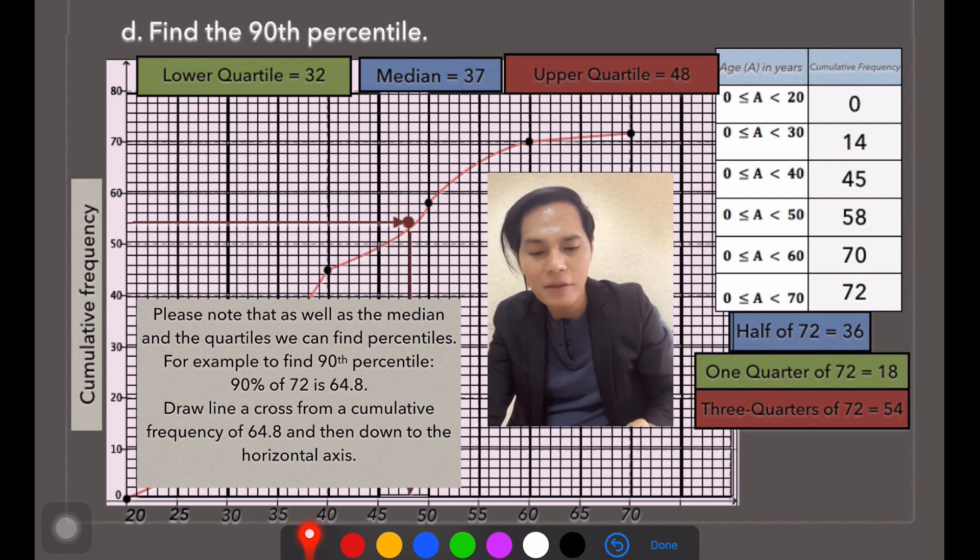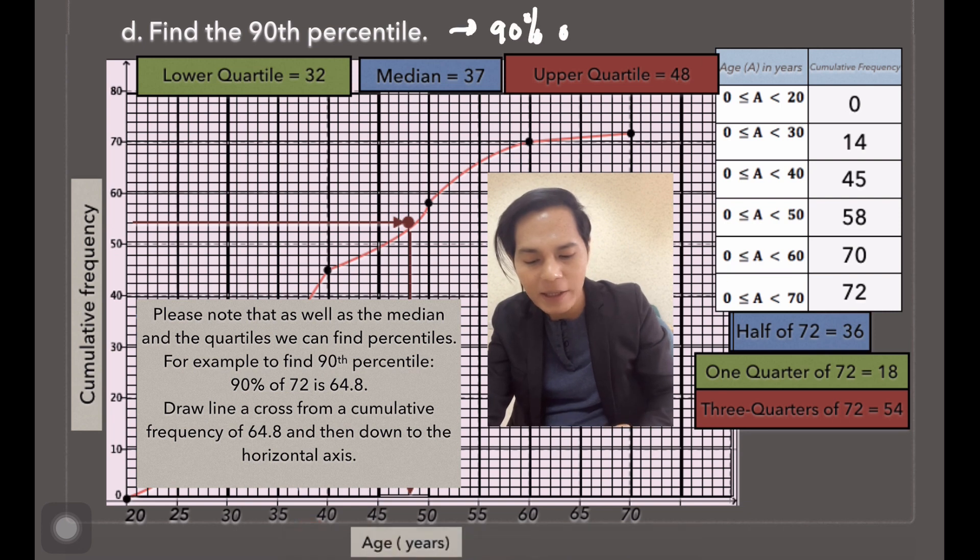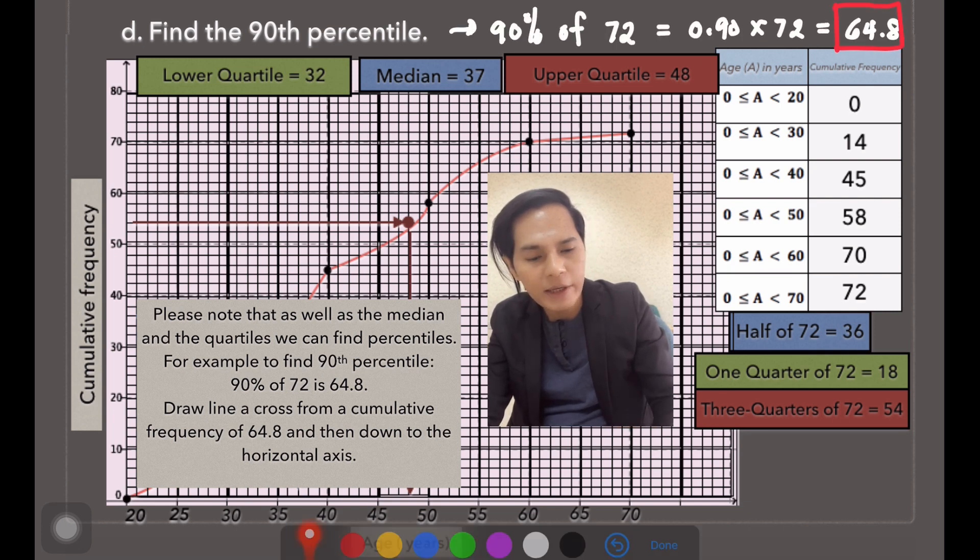For example, to find the 90th percentile, just simply 90% of 72, which is 0.90 times 72 equals 64.8.